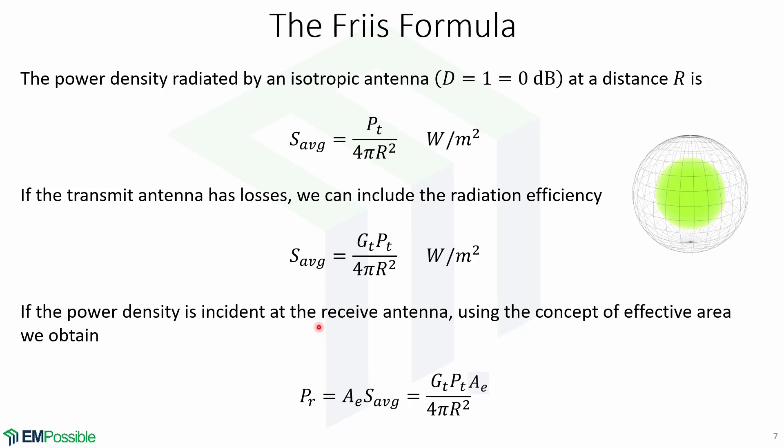Now, if the power density is incident at the received antenna using the concept of effective area, we can obtain that PR equals the effective area times S average, which is equal to GT times Pt over 4πr².